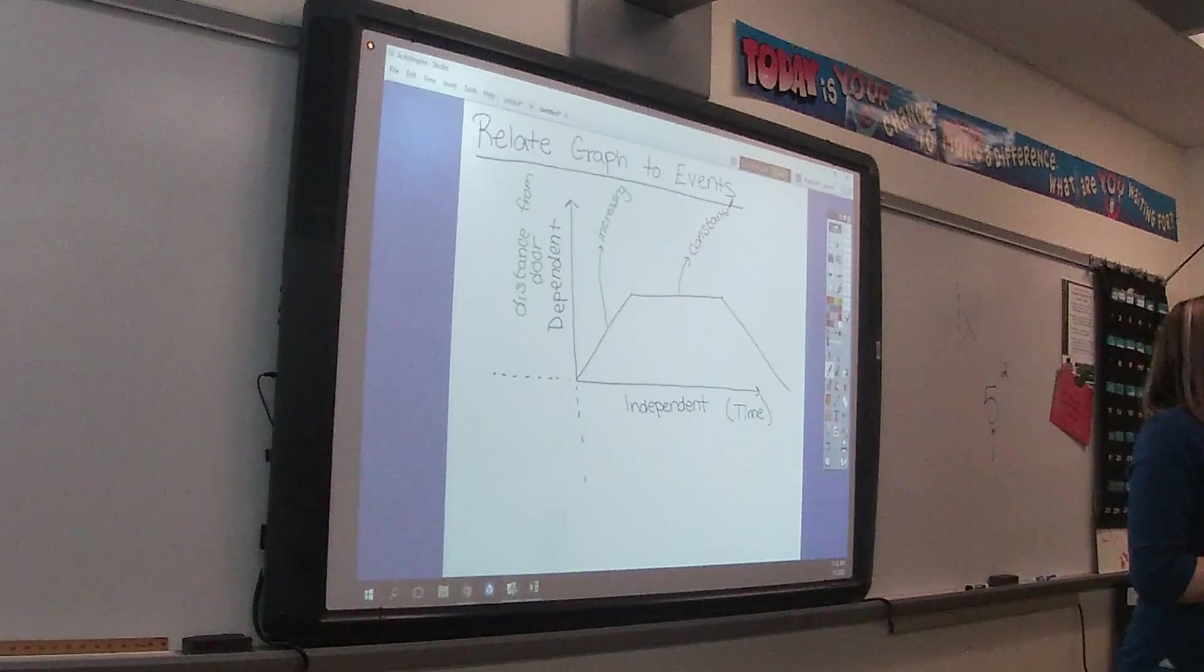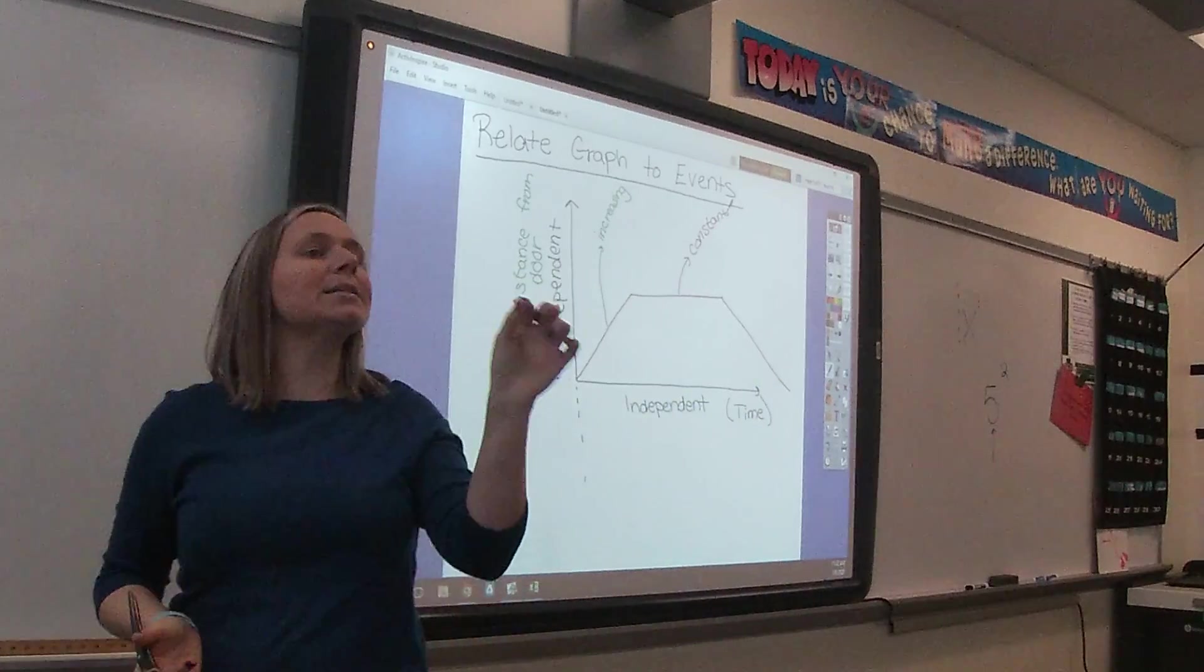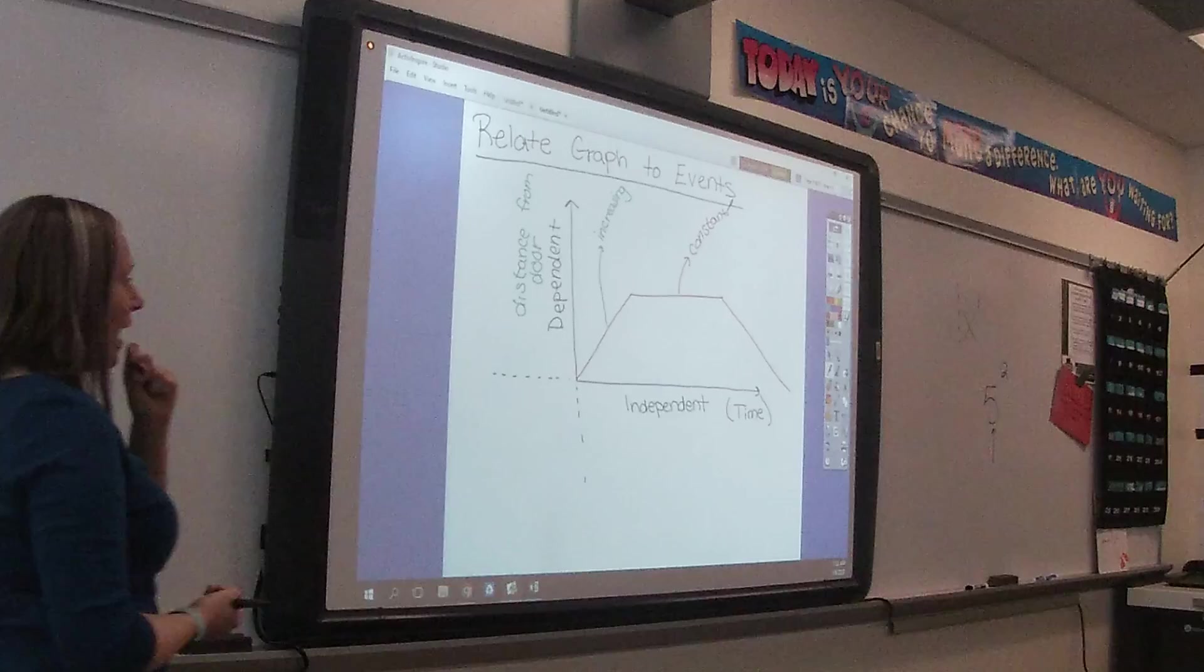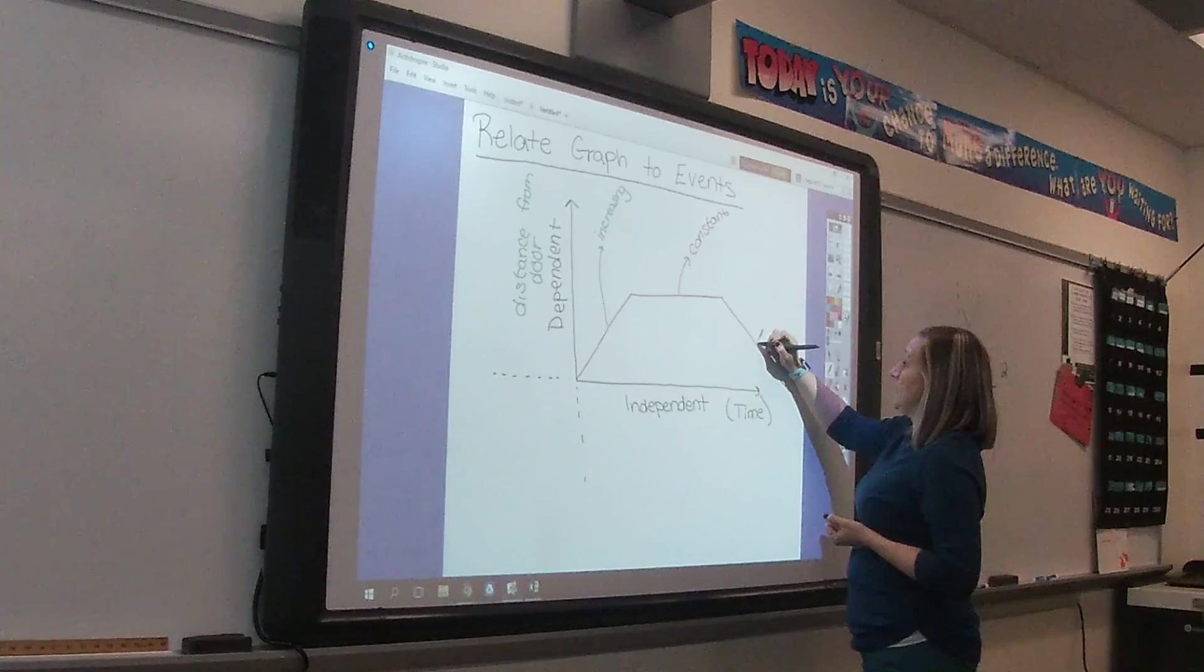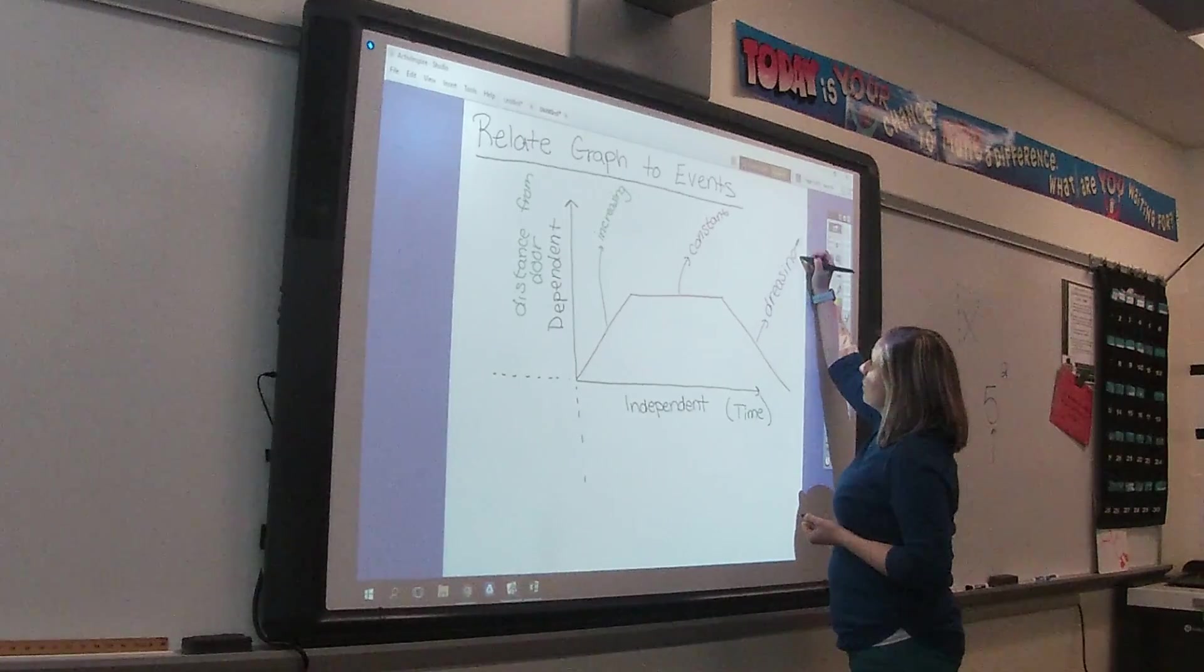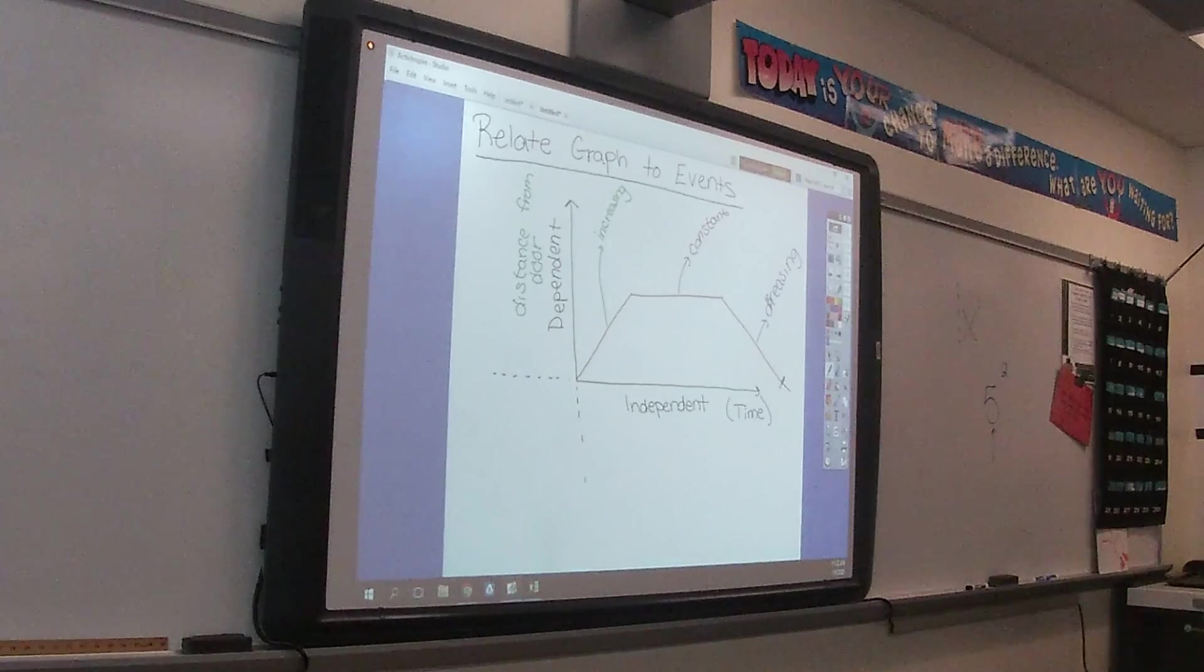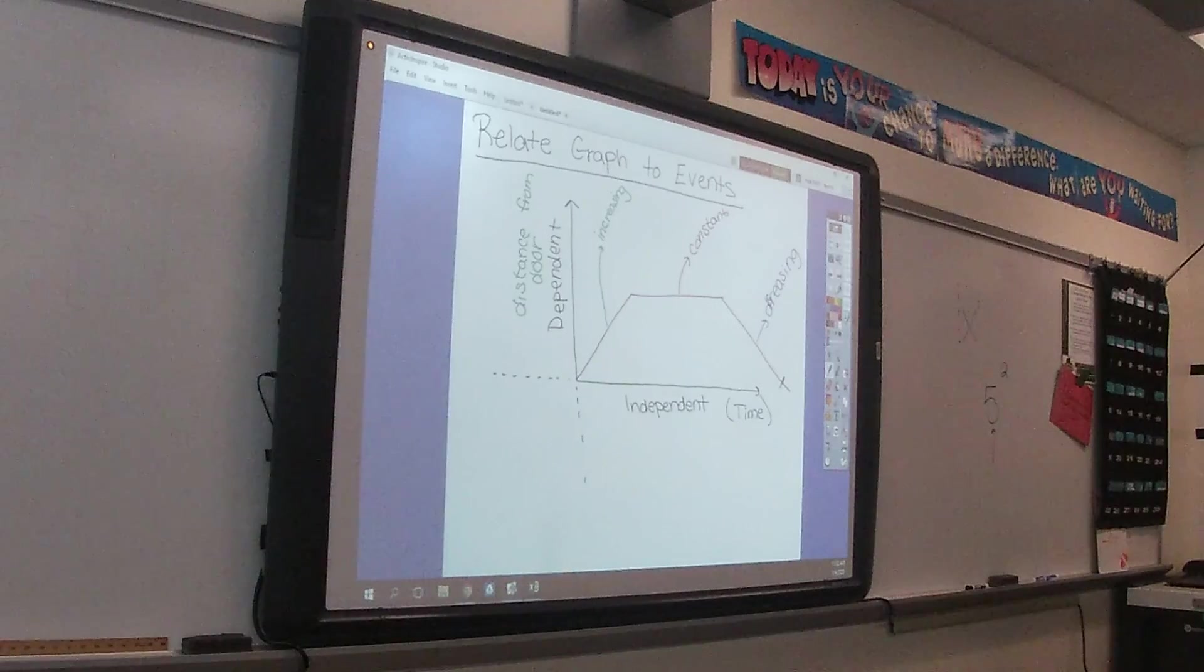But would it also be possible that I'm doing this? It's weird. You guys have met me. I'm weird sometimes. But it is possible. Then what happens? Then I have decreasing. I missed a whole part in there. So I have an increasing distance from the door, a constant distance from the door, and a decreasing distance from the door.